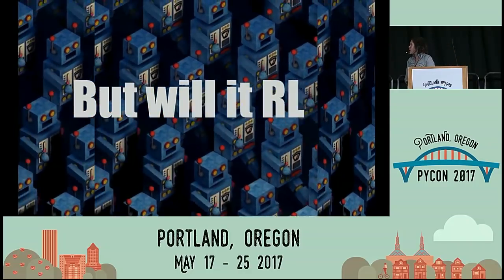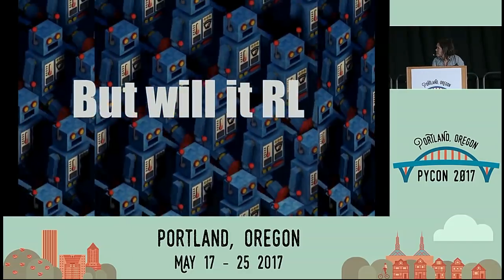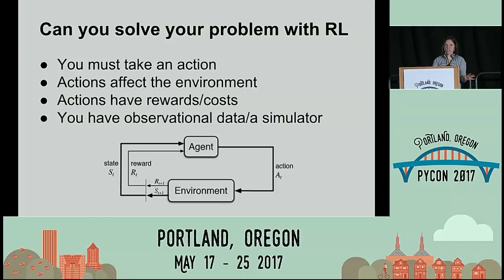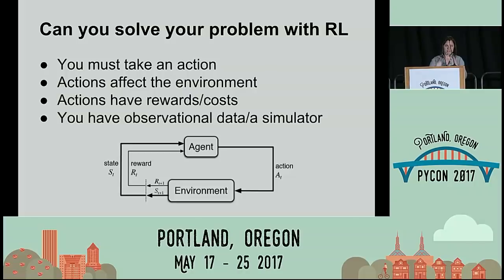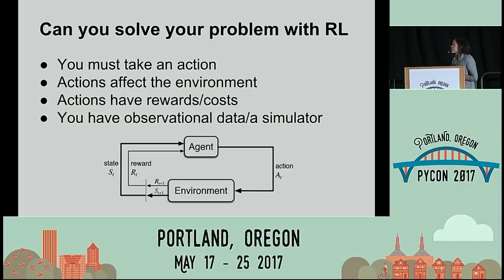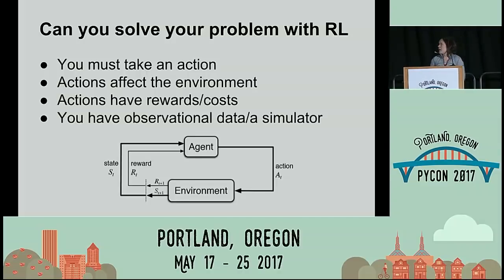The important question is: are you going to be able to solve your own problems with reinforcement learning? If there's one thing I want you to remember, it's that diagram. The important pieces are: your agent, which acts on your environment; your agent gets a reward signal; and based on the state it's in, it transitions into a new state. To know whether your problem makes sense for reinforcement learning, you're going to want to know that you need to take actions on your environment, those actions typically affect the environment, those actions have rewards or costs associated with them, and you have either observational data or a simulator to work with.